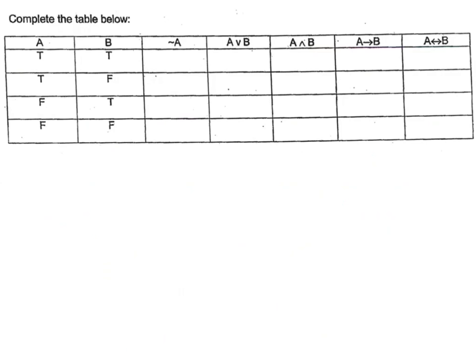Now let's look at a simple truth table. A and B are already filled. If I have NOT A — this is basically the negation of A — then as I mentioned before, true becomes false. So you see how I used to have true, now it becomes false. Next one, true becomes false, and then those two falses become true and true.